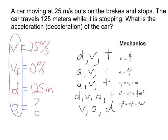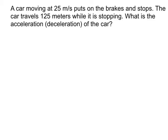Pulling out the reference tables and checking the variable list, I need VI, VF, distance, and acceleration — with no time involved. The formula with V, A, and D but no time is the last one: VF² = VI² + 2AD. I write that formula down.